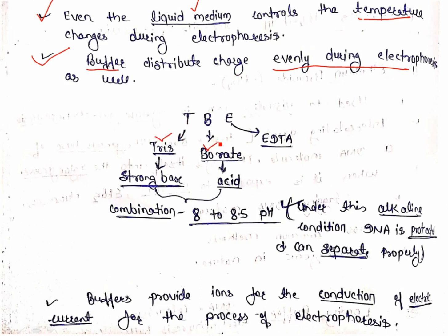TBE full form is Tris, Borate, and EDTA. Tris is a strong base, borate is an acid. When a strong base and an acid are combined, the averaging gives a pH of 8 to 8.15. Under this alkaline condition, DNA is protected and can separate properly. EDTA's role has been explained — it protects DNA from DNase attack. The combination of Tris and borate provides this buffering to maintain the ideal slightly alkaline pH for DNA stability during electrophoresis.